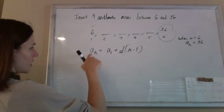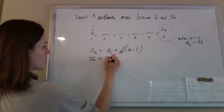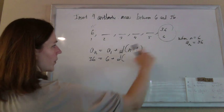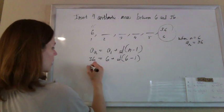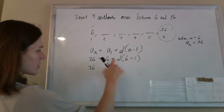So plugging that in, 36 is the nth term, which equals the first term, 6, plus the common difference that we don't know, times n minus 1, which is 6 minus 1. Now we have a formula with just one unknown that we can solve for.